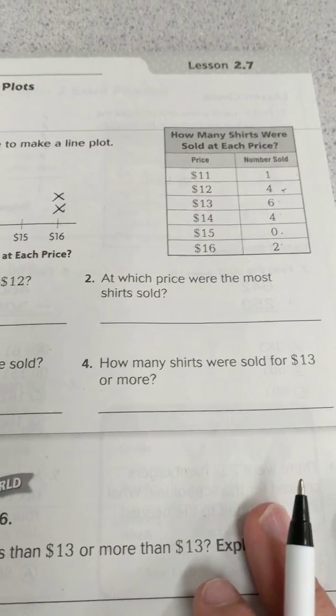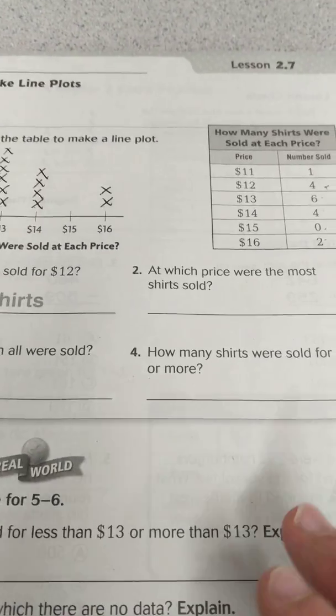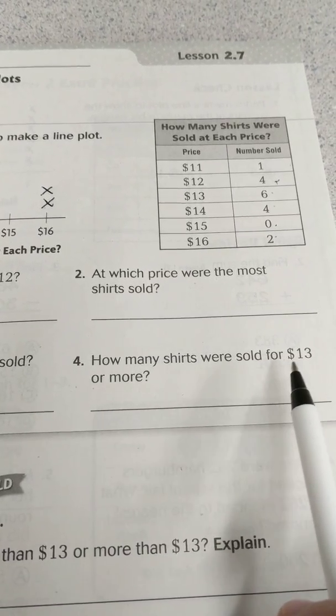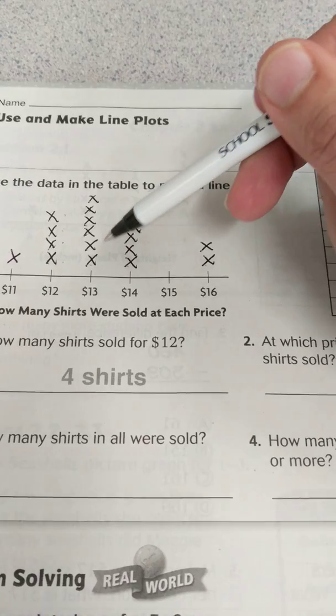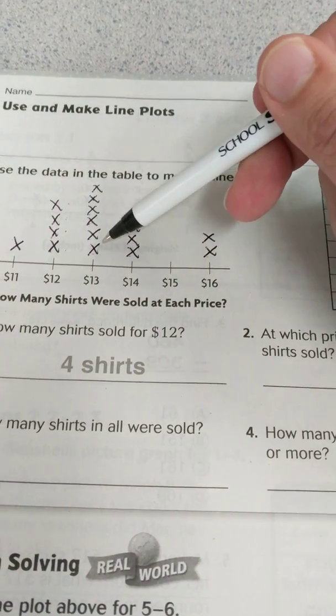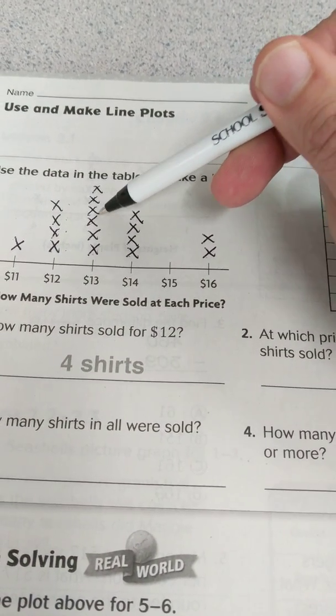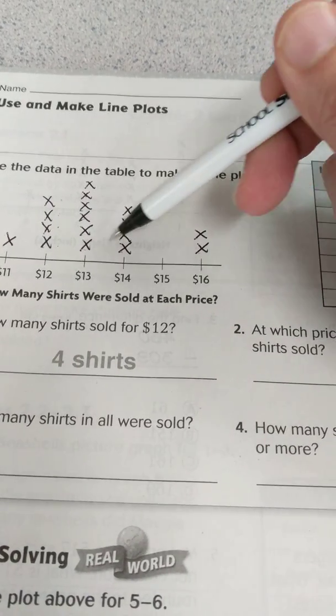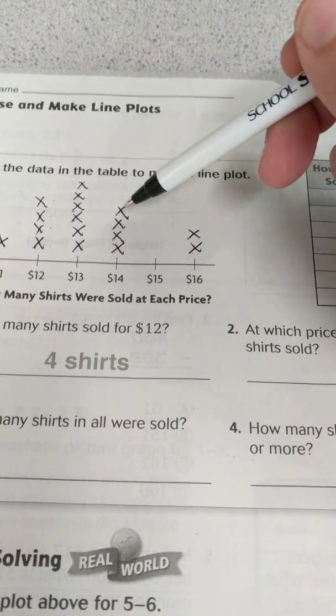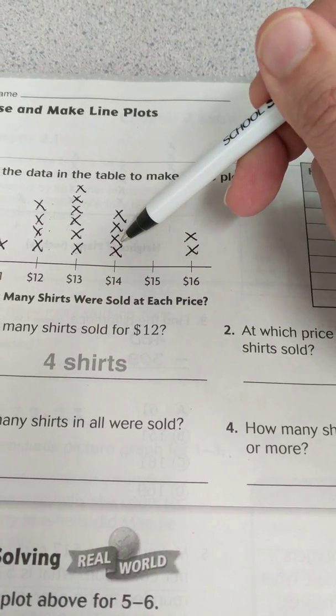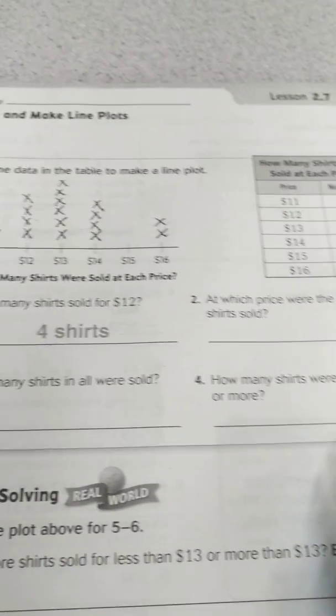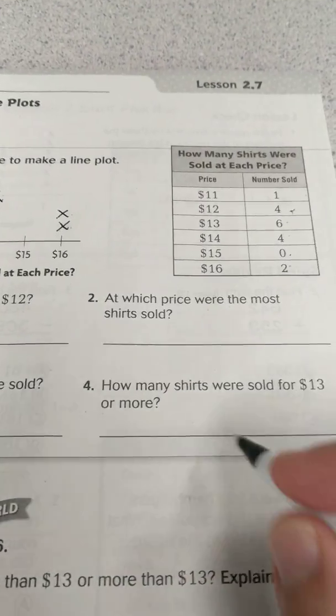I'm going to skip down to number 4. How many shirts were sold for $13 or more? So of course you're going to include the ones that were $13, which 1, 2, 3, 4, 5, 6 of them were. But we're also going to add the ones that were priced higher than that and include those. So we had 6, 7, 8, 9, 10, 11, 12. So 12 shirts.